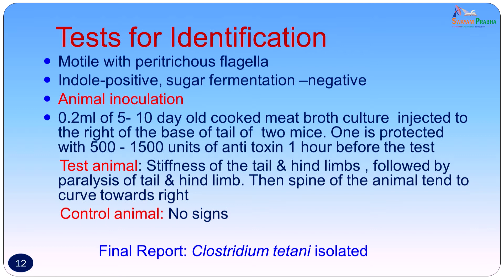The tests used for identification of this culture were motility — the organism had a stately motility suggesting peritrichous flagella — indole was positive, and sugar fermentation was negative. Confirmation was done by animal inoculation, as it was important to demonstrate the toxin. 0.2 ml of a 5 to 10-day-old cooked meat broth culture was injected into the base of the tail of two mice; one was protected with 500 to 1500 units of antitoxin one hour before the test. The test animal developed stiffness and then paralysis of the tail and hind limb, and the spine curved towards the right. No signs were seen in the control animal. The final report was Clostridium tetani isolated; no sensitivity testing was done as Clostridium are not known to develop resistance.